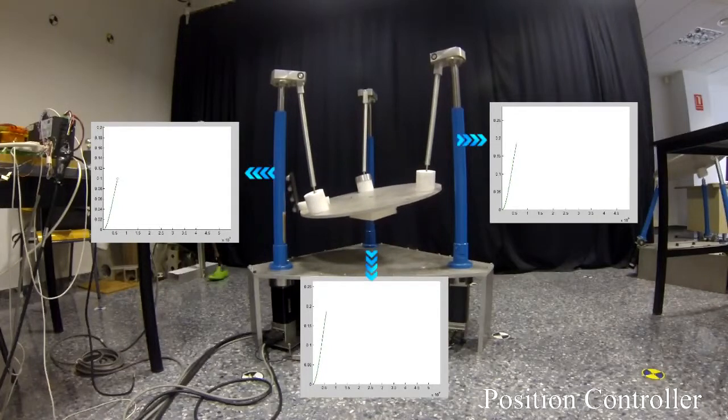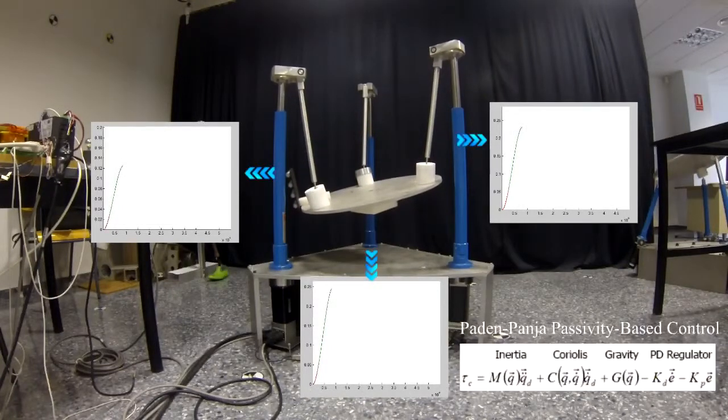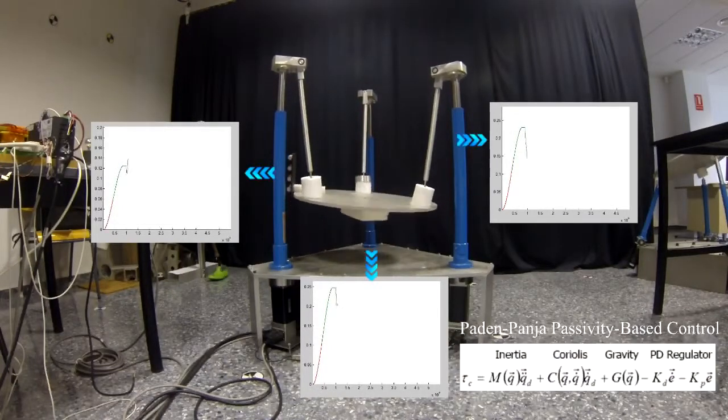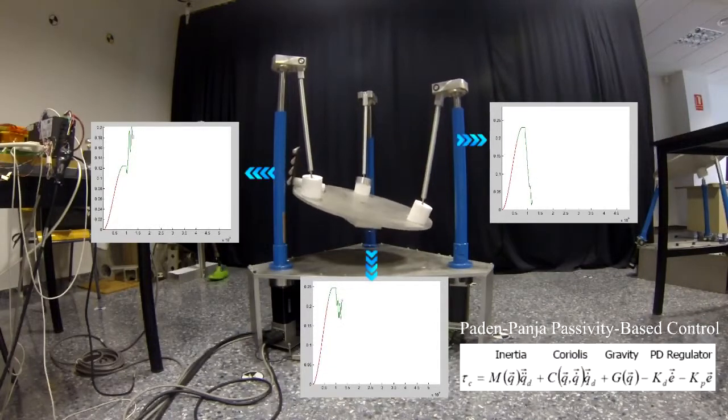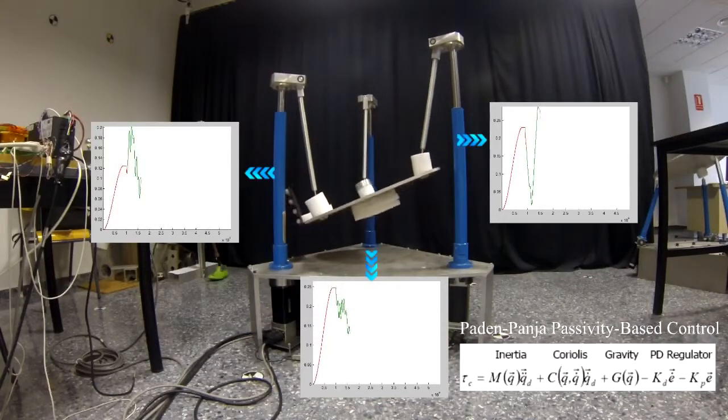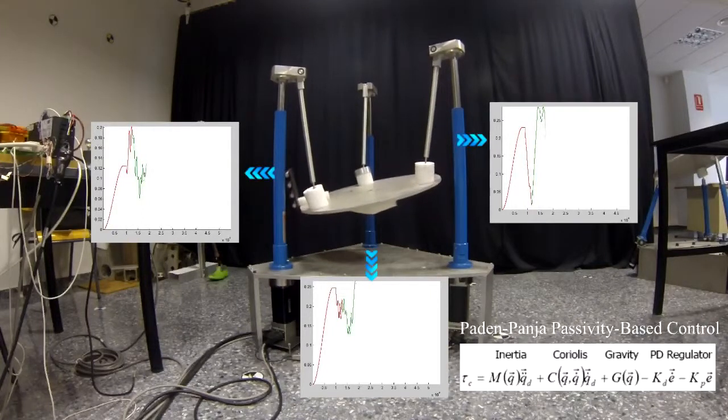For a control position, the CVT-based controller proposed by Padden and Panja has been implemented, in which the kinematic and potential energy is modified properly to achieve an asymptotic stability of the controller.